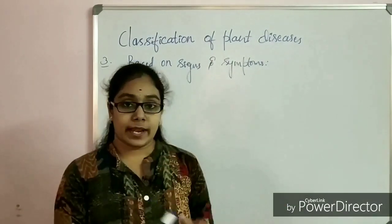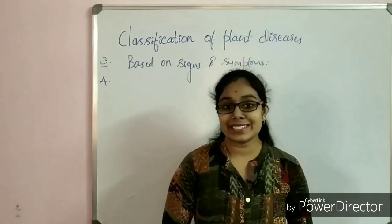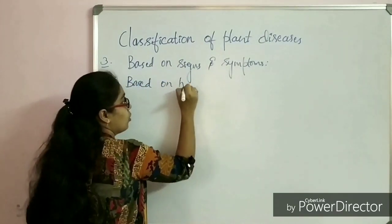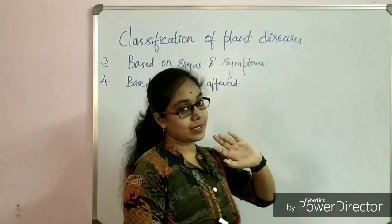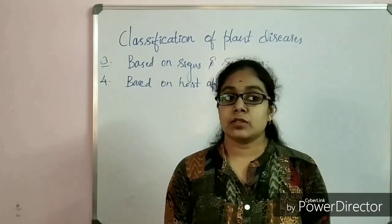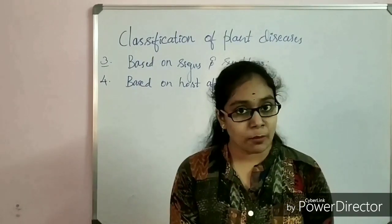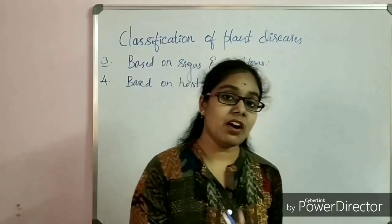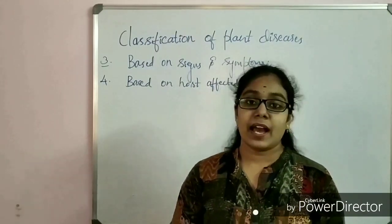Now let us move on to the fourth category. Here we classify diseases based on the host affected. A pathogen may enter millets, vegetable crops, fruit-bearing plants, or flower-bearing plants. Based on these hosts, we classify plant diseases into cereal crop disease, vegetable crop disease, fruit crop disease, and millet diseases.